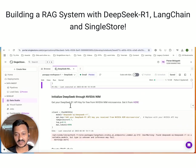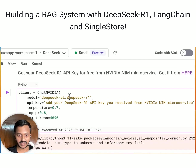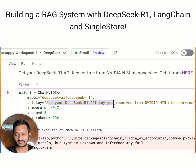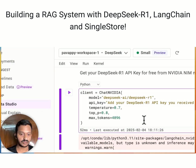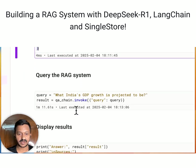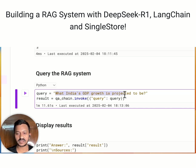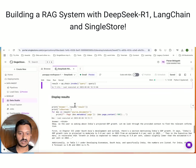You can get the DeepSeek R1 API key from this link - just click it and go there to get your key. Then you mention your model name and the API key obtained from that link. Set the temperature and all the required parameters, and then we create a RAG chain. This is the RAG chain we create, and then we query the RAG system. My query is: what is India's GDP growth projected to be?